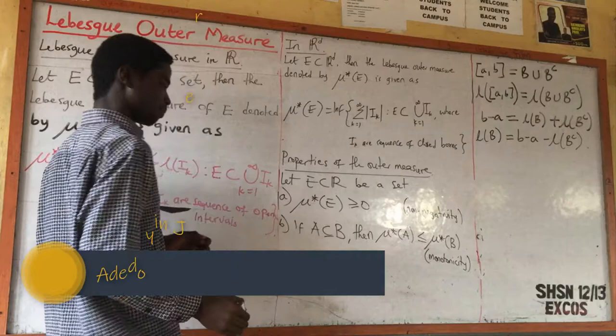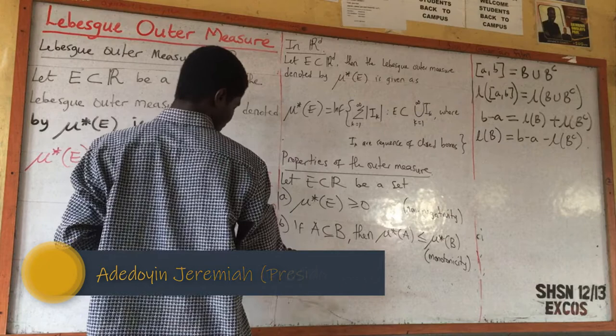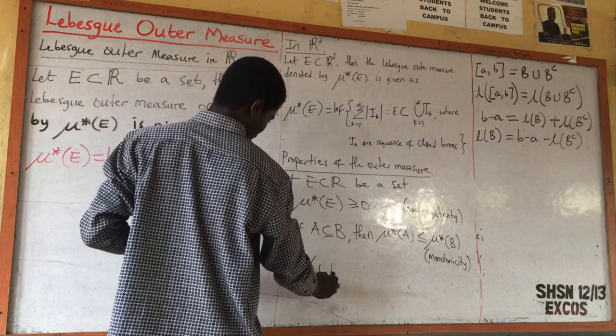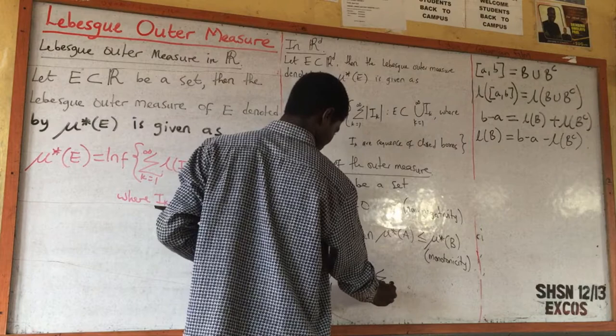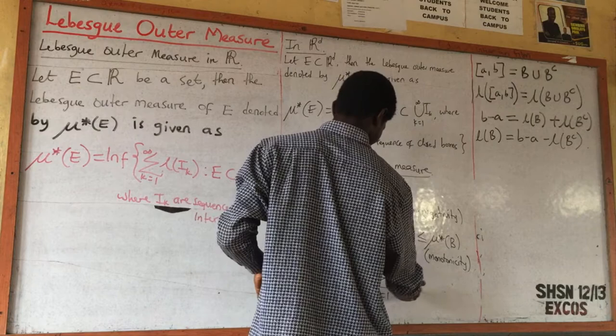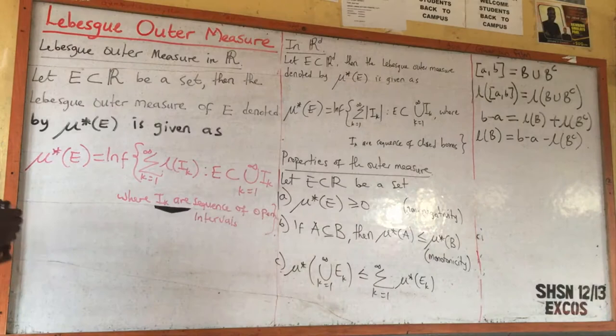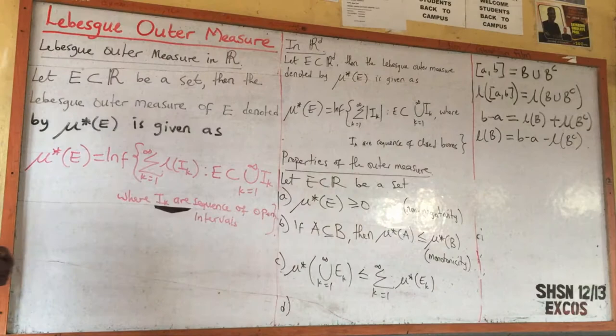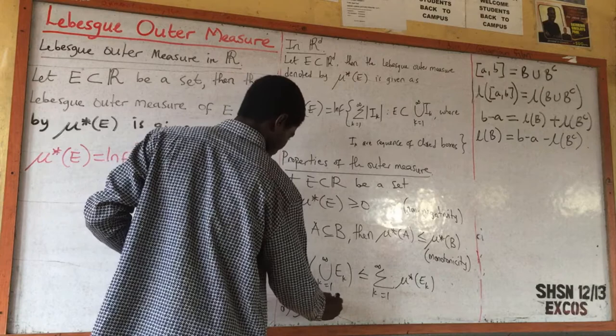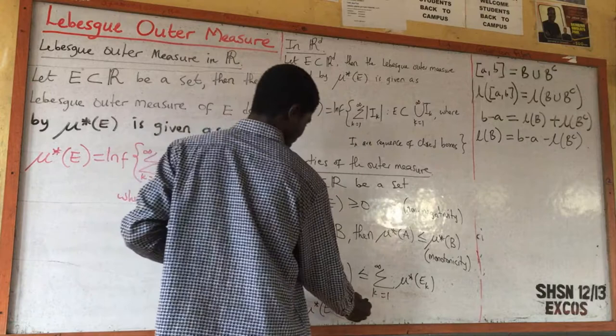The third property states that the outer measure of the union of E_k from k=1 to infinity is less than or equal to the summation from k=1 to infinity of the outer measure of each E_k, where E_k is a sequence of sets. The fourth property is that the outer measure is translation invariant: the outer measure of E plus s equals the outer measure of E.